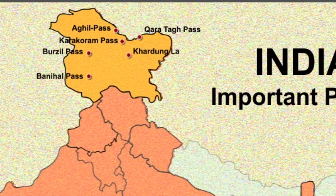Then it is Changla Pass. It is a high mountain pass in the Ladakh region. It is claimed to be the second highest motorable road in the world.